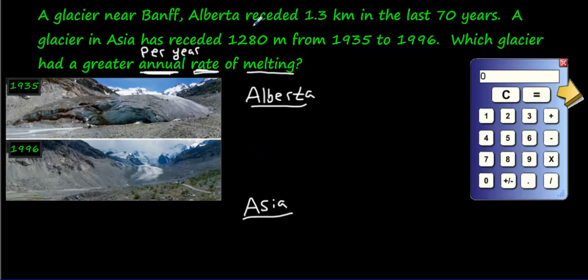So let's start with Alberta. It receded 1.3 kilometers. Remember, when you do proportions, I've talked about this in the other videos, you need a known ratio first. Get your known ratio. What do we know about Alberta? We know it's receded 1.3 kilometers in 70 years. We know that. But the question asks us which has a greater annual rate of melting, a greater annual rate, a yearly rate, not for 70 years.